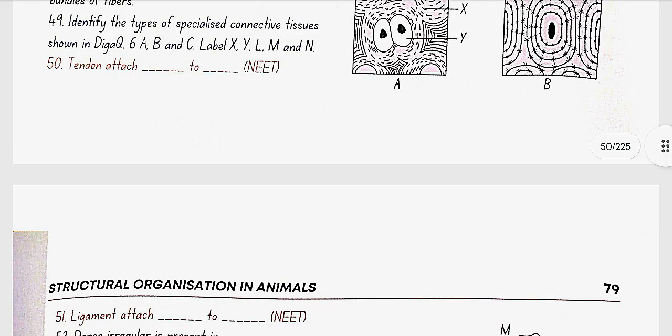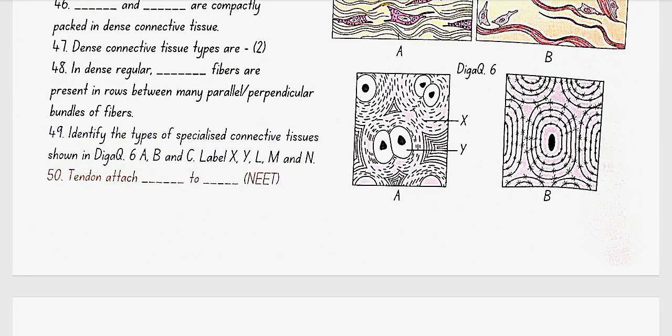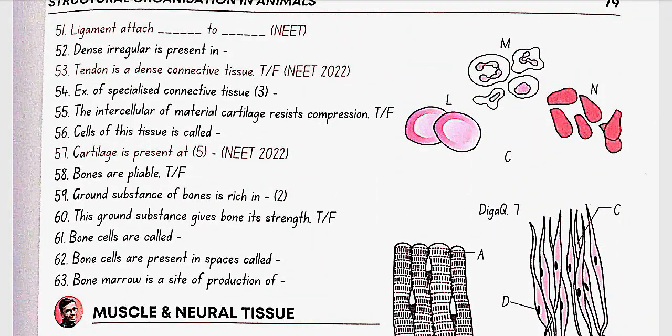Identify the types of specialized connective tissue shown in diagram 6, A, B, and C, label X, Y, L, M, and N. Here in diagram 6: A is cartilage, X is collagen fibers, Y is cartilage cells, B is bone, C is blood, L is RBCs, M is WBCs, and N are platelets.